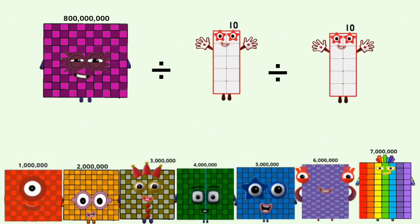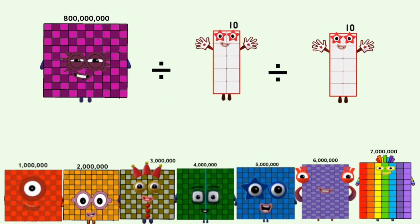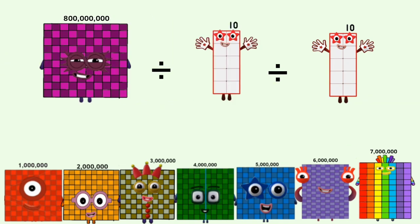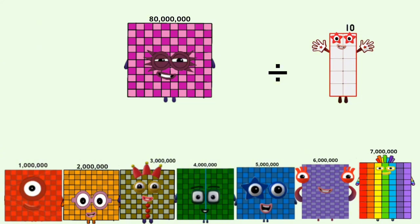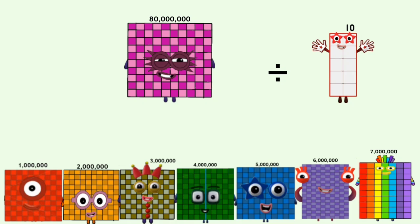800,000,000 divided by 10 equals 80,000,000. 80,000,000.